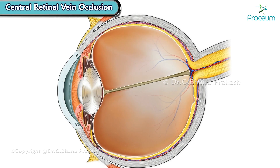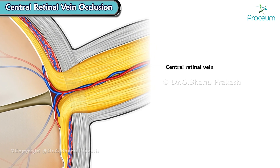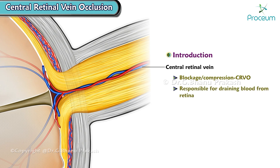Hello there, everyone. In this module, we'll be learning about central retinal vein occlusion. Let's begin with a quick introduction. Central retinal vein occlusion is a condition characterized by the blockage or compression of the central retinal vein, which is responsible for draining blood from the retina. Let's explore the key aspects, including its types, risk factors, diagnosis, and treatment.